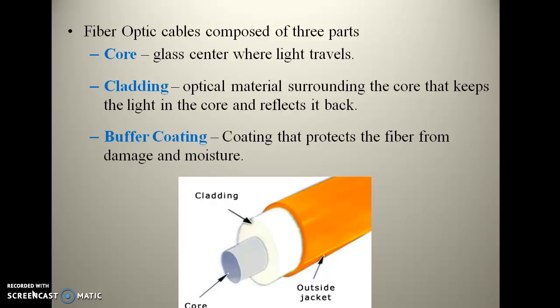Now we will have a look at its composition. Here you can see the diagram of the fiber optic cable. It is made up of three parts: first is the core, then it is surrounded by cladding, which is again surrounded by an outer coating. The core is the glass center from where light travels.